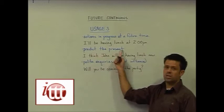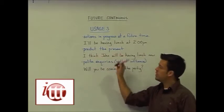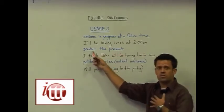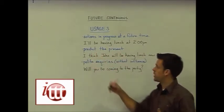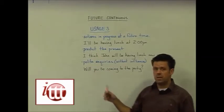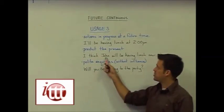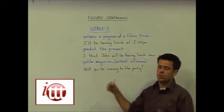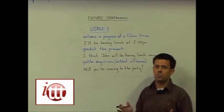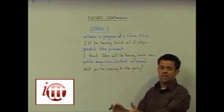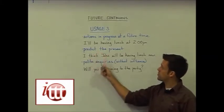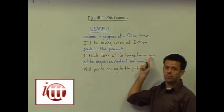We can use it to predict the present. Because we're predicting, we wouldn't often predict something about ourselves, so perhaps somebody has asked about a gentleman John and his whereabouts. You're not sure about his whereabouts, but you're going to predict it and use the future form: 'I think John will be having lunch now.'